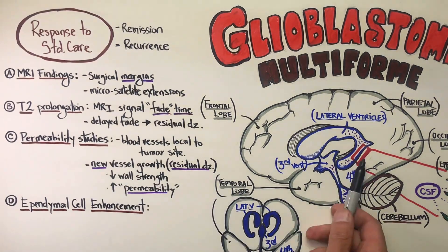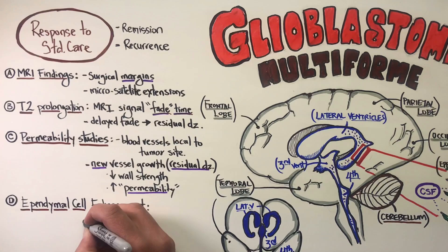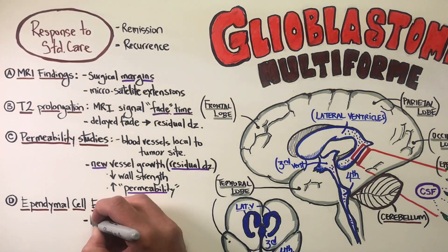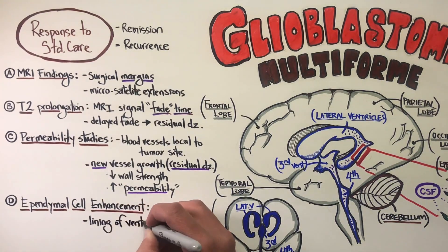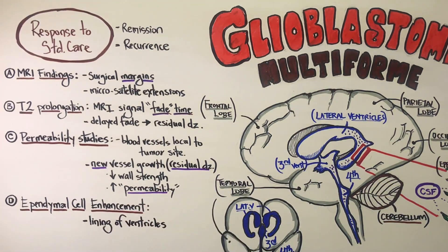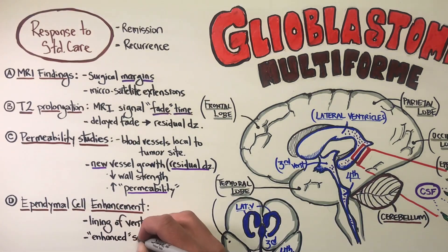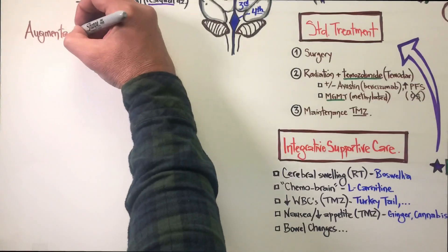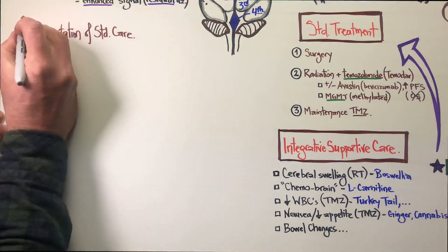The ependymal cells, which I mentioned before, make the cerebrospinal fluid as well. When they show enhancement — in the lining of the ventricles — it is another sign that there may be some residual disease and recurrence in the surgical bed.